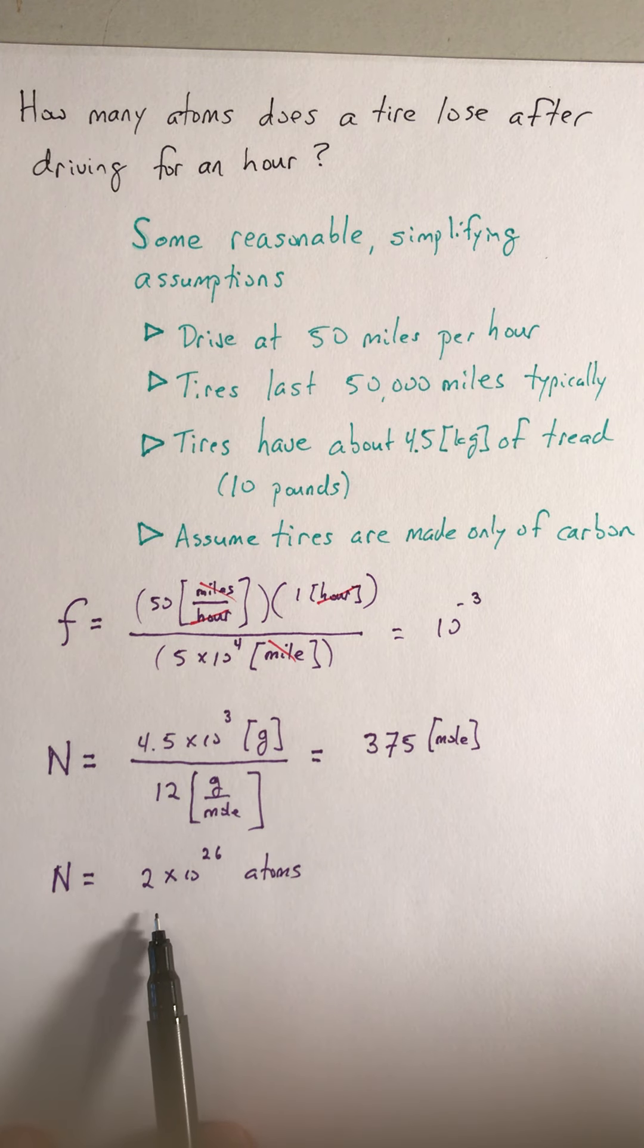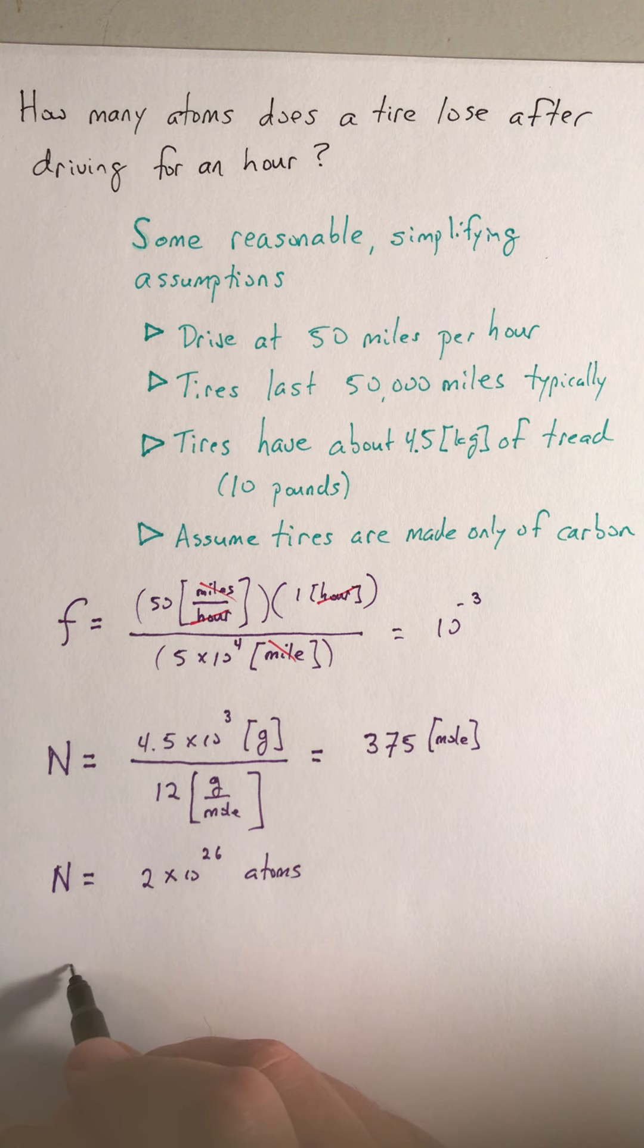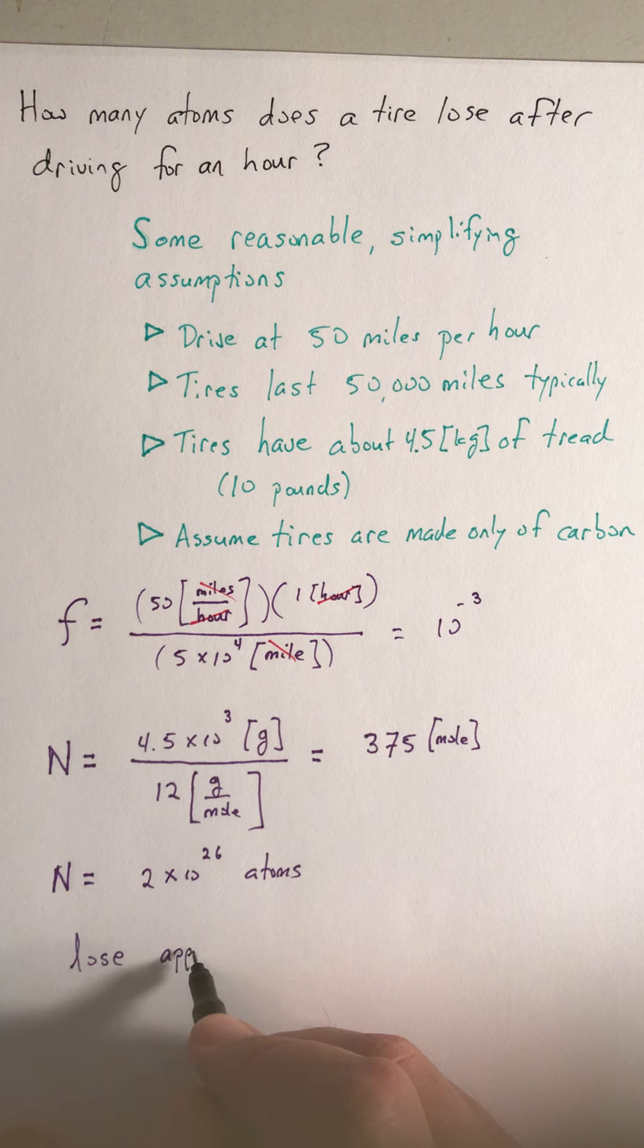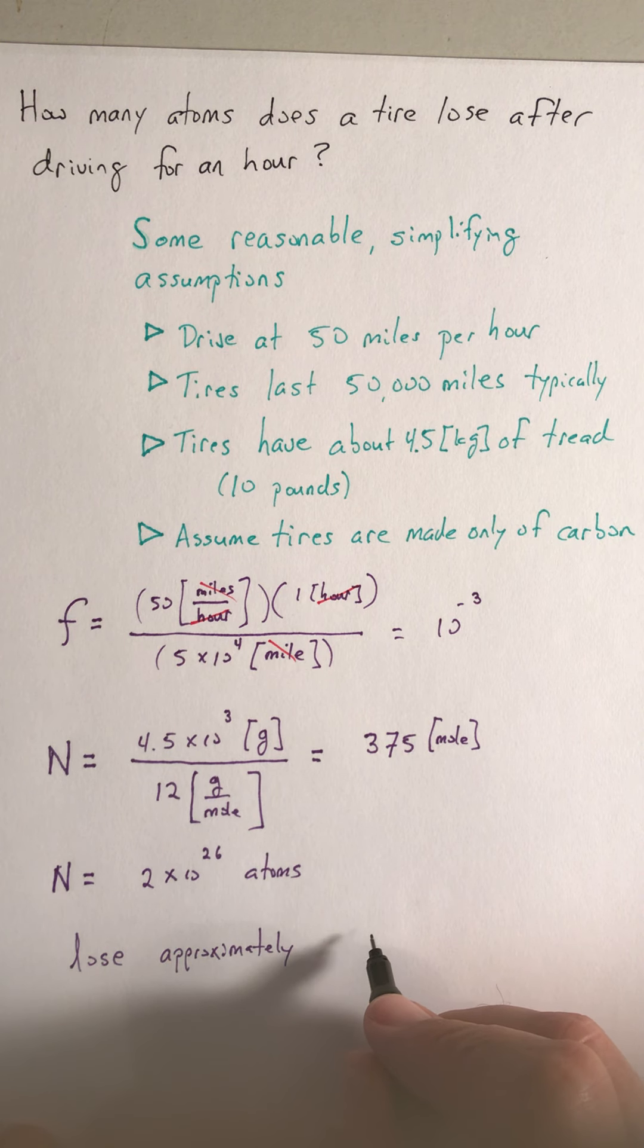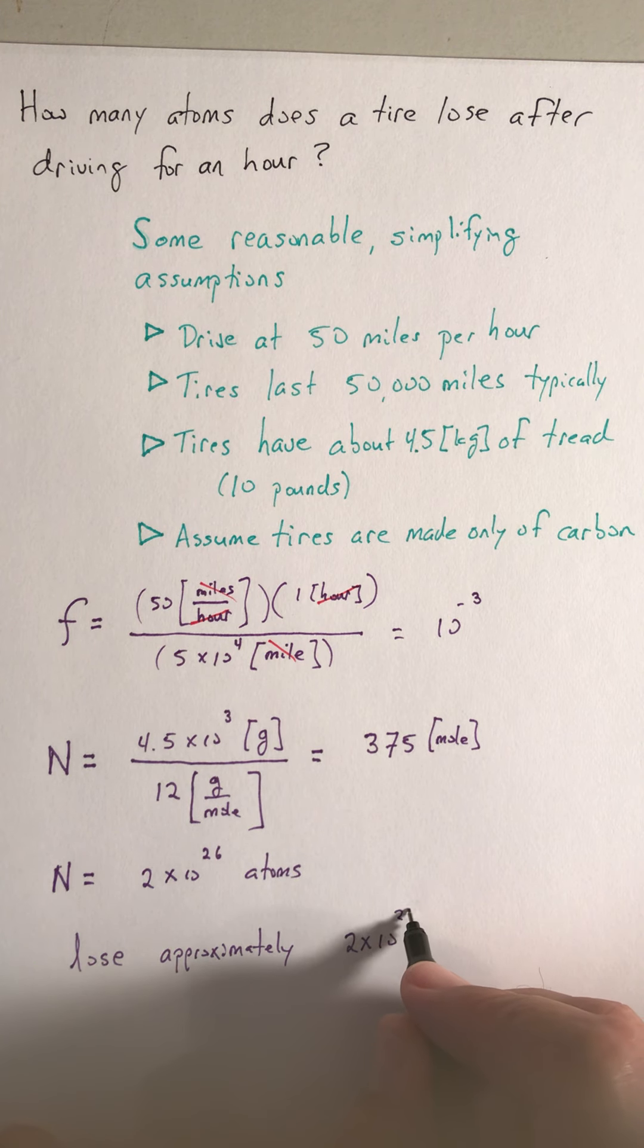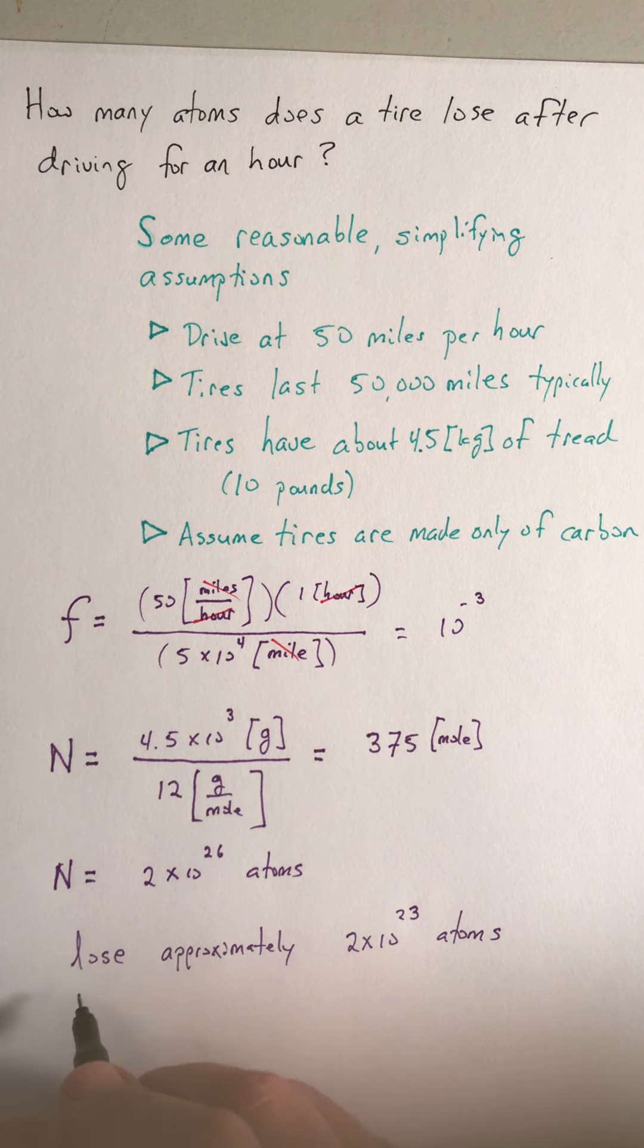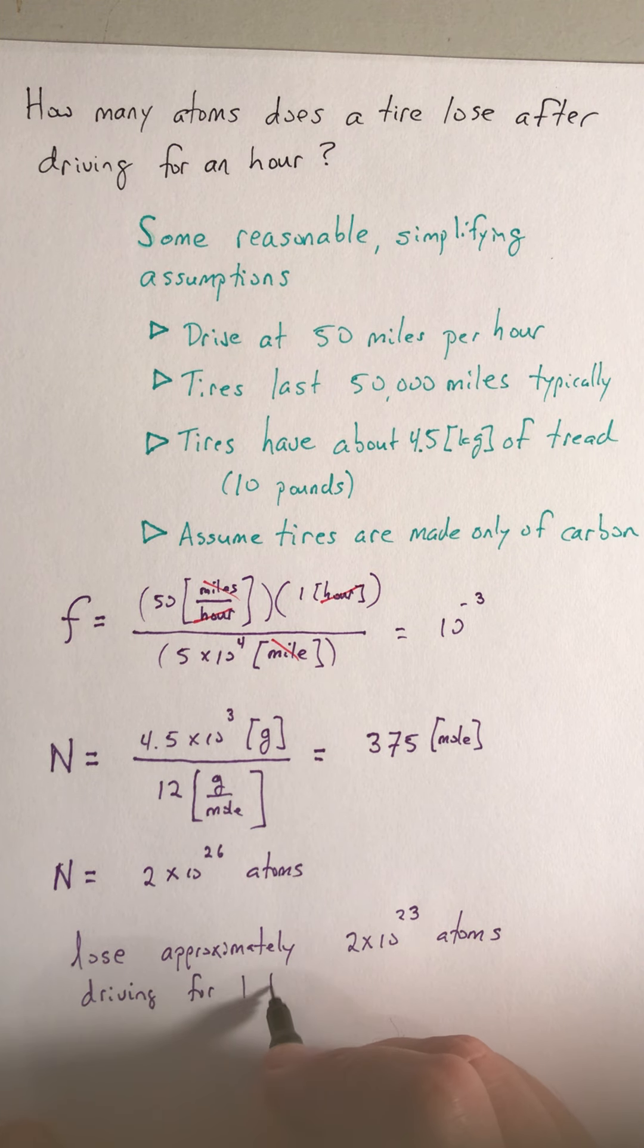So 2 times 10 to the 26 times 10 to the minus 3—you'll lose approximately 2 times 10 to the 23 atoms driving for one hour.